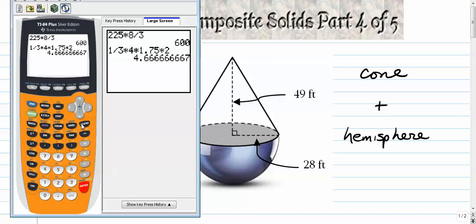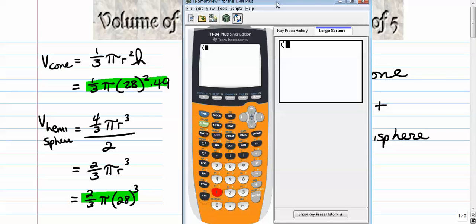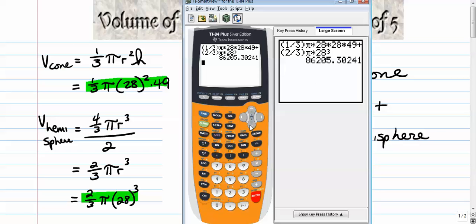So we'll get our calculators going. Here we go. 1 third times pi times 28 times 49 plus 2 thirds times pi times 28 to the third power. The third power is in the math menu down here. The third option. You just press 3 and you'll get it.